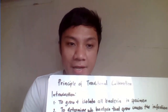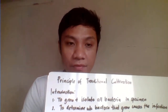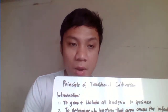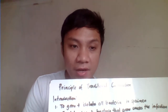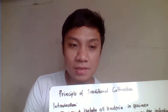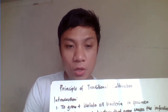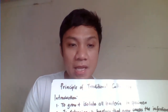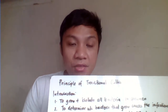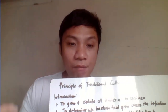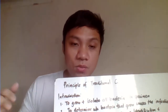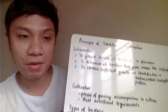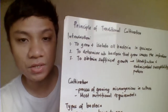Today we will be discussing the principle of traditional cultivation. This is the process where we try to grow bacteria in different culture media in a traditional, manual way. Currently we also have automated methods for culturing bacteria where you don't have to plate or transfer from one culture media to another.